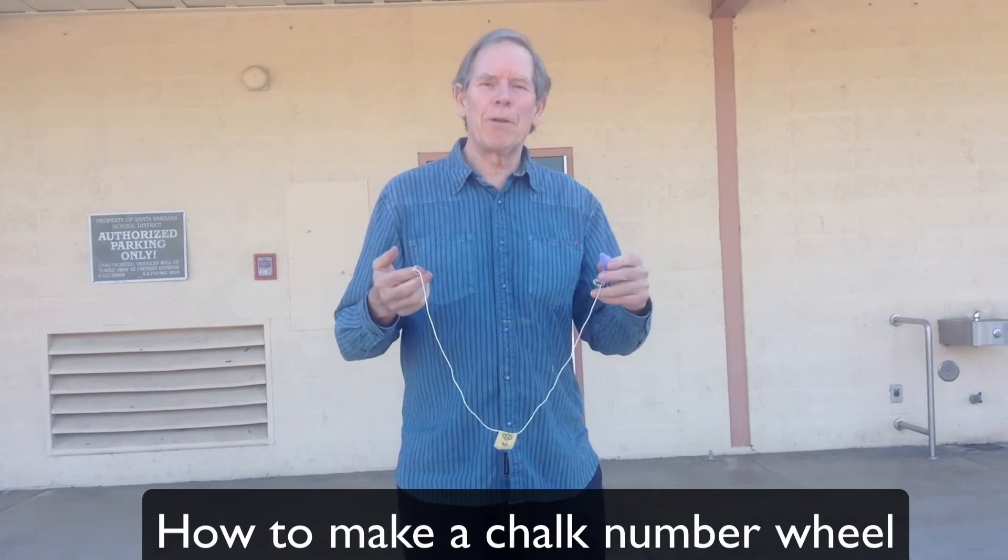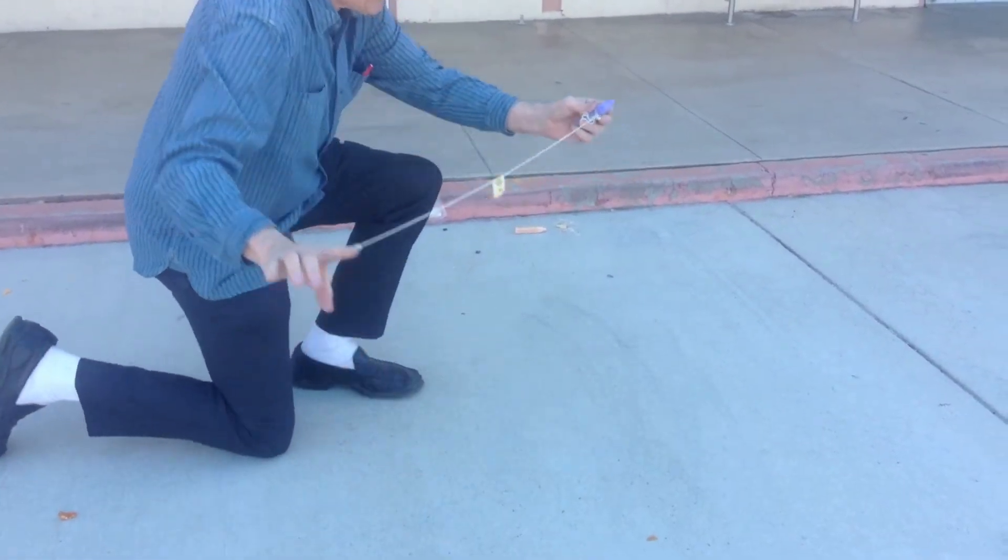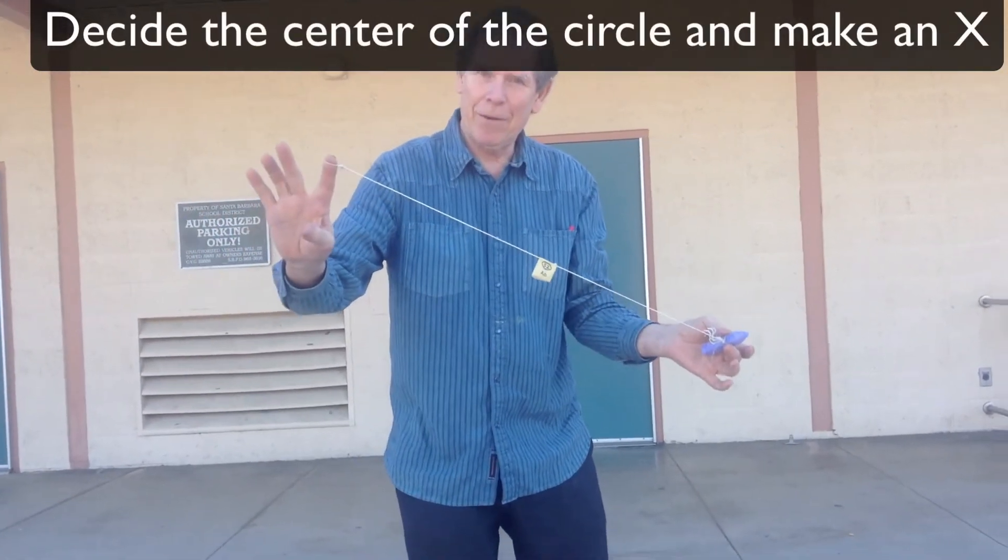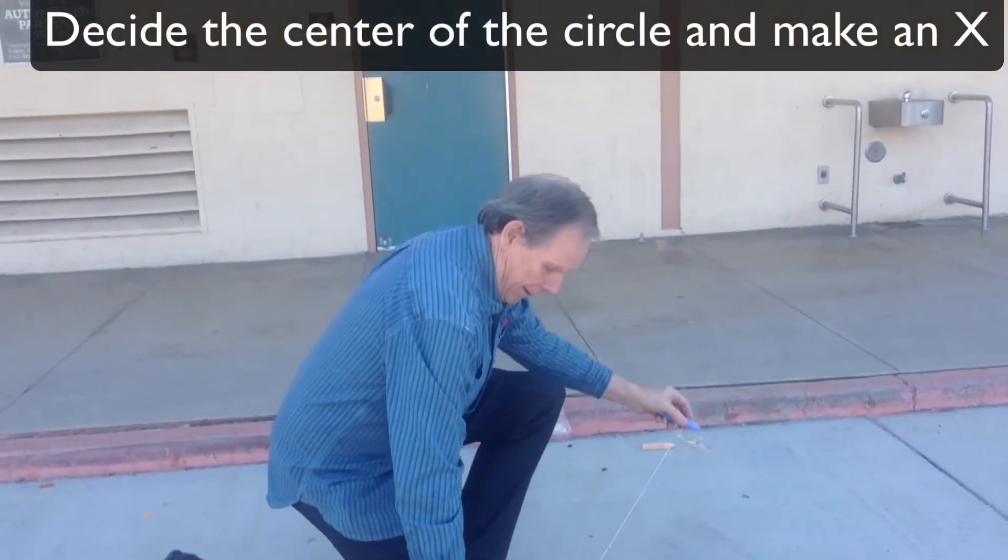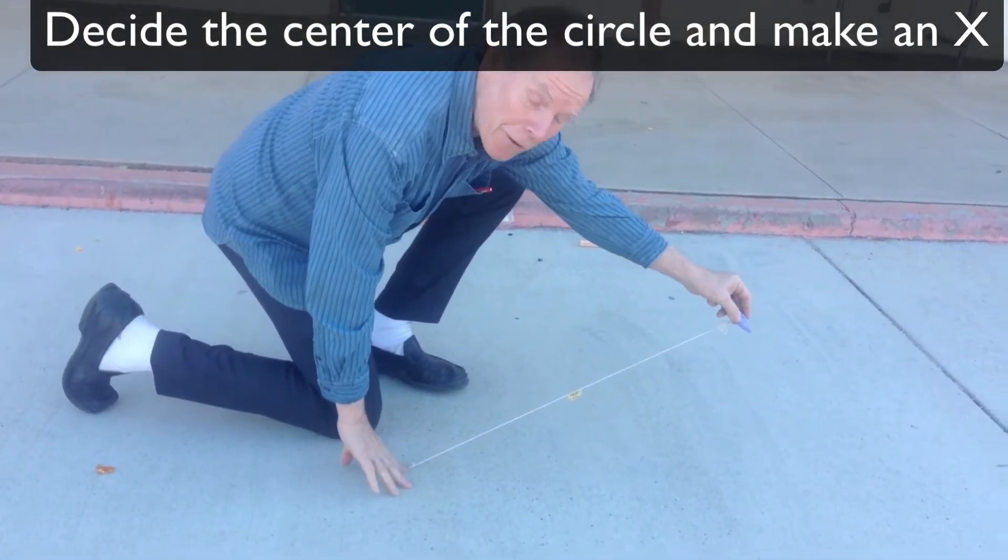So I'm Mr. Numbers and I'm going to show you how to do a chalk wheel. What we do is we have a string with two loops in it. One you put your chalk and the other you put your finger in it. And you put your one finger down and that becomes the center of your circle.